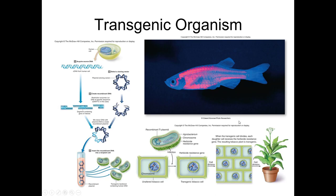Look for something like humans making hemoglobin, or bacteria making enzymes to break down food or make their cell wall — answers that don't have two species in them. The concept is: if you take DNA from one species and put it into another, it's a transgenic organism.